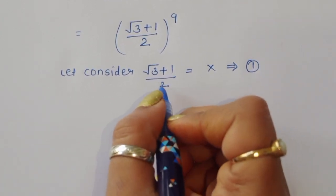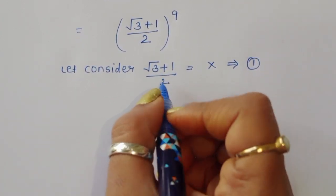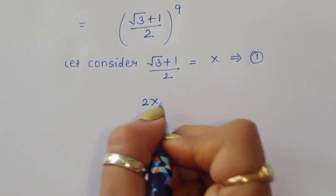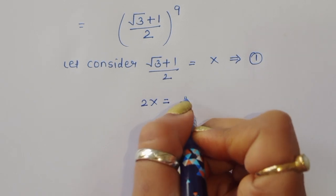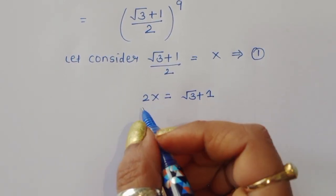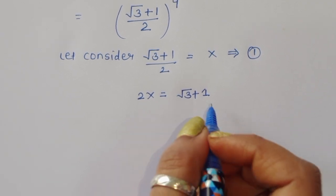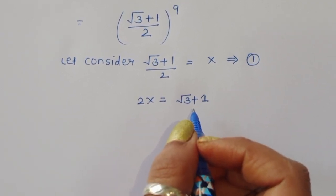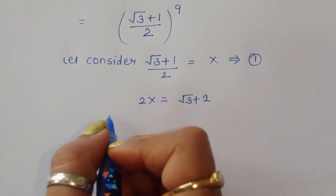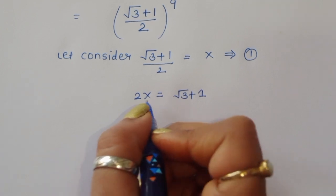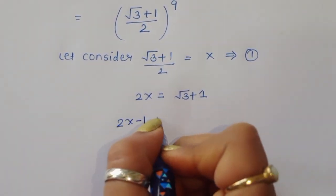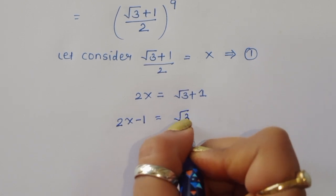Cross multiplying gives us 2x equals square root of 3 plus 1. Rearranging, 2x minus 1 equals square root of 3.